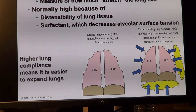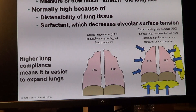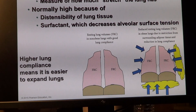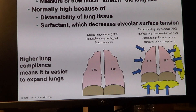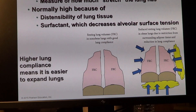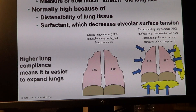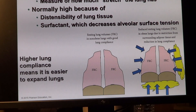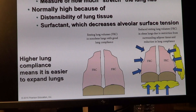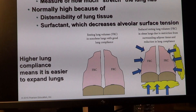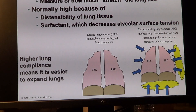Lung tissue itself can be affected — for example, emphysema involves destruction of alveolar sacs and ducts, resulting in destruction of elasticity and lung recoil. Surfactant changes also alter alveolar surface tension. All of these account for lung compliance and respiratory insufficiency.